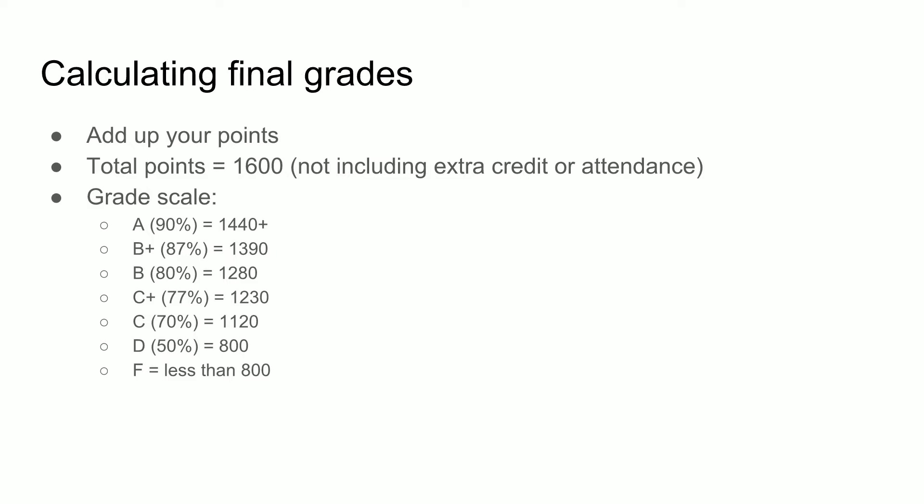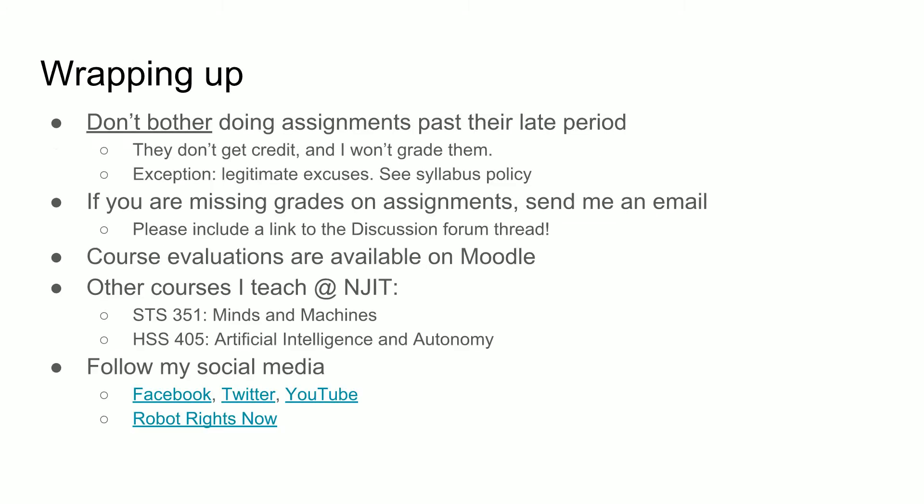If you're worried about your grade, here's how you calculate your final grade — this is all information in the syllabus. Add up your points on Moodle. The total course is 1600 points. That doesn't include extra credit or attendance; you can get more than 1600 points with those. You need above 1440 for an A. The syllabus allows for a five-point wiggle room, so if you're at 1435 I'll give you the bump to an A, but it's only five points and there's a lot of extra credit. Don't bother going back and completing old assignments past the late period — I won't accept those. The exception is if you have a legitimate excuse excused by the dean or an extension we've already discussed. See the syllabus policy for more details.